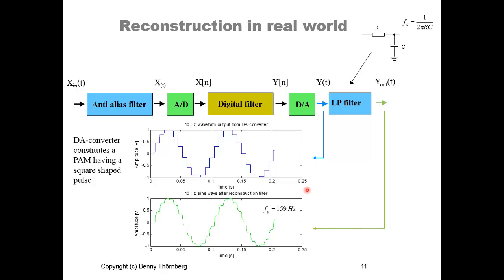We model a 10 Hz sine wave coming out of the D-to-A converter. You can see the typical staircase steps from the discrete levels of the D-to-A converter. Using a low-pass filter with a cutoff frequency of 159 Hz, the edges are smoothed and the output begins to look more like a sine wave instead of pure steps.